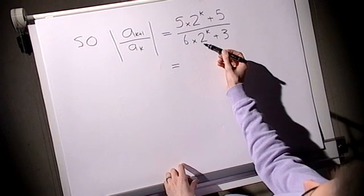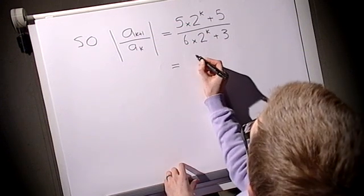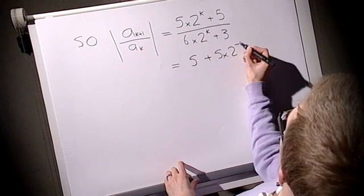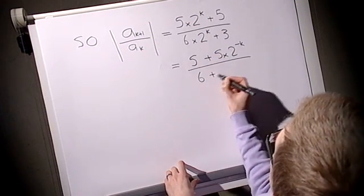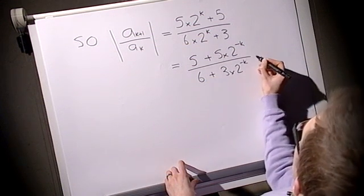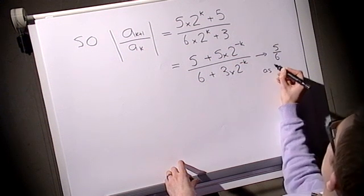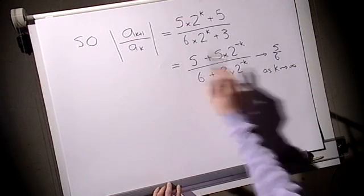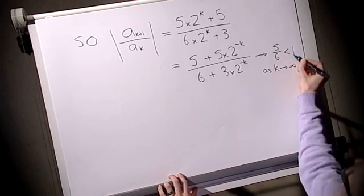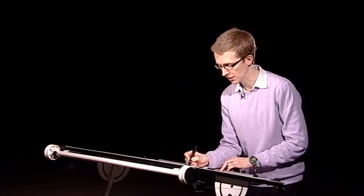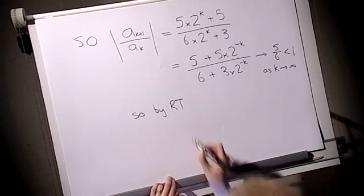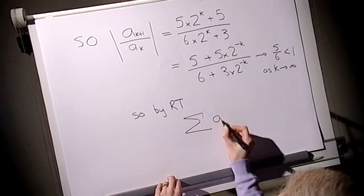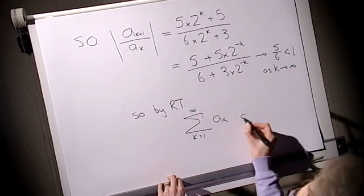You may see that as k tends to infinity, this is going to tend to 5 sixths. One easy way to see that would be to multiply the top and bottom by 2 to the minus k. So 5 plus 5 times 2 to the minus k, 6 plus 3 times 2 to the minus k. And this tends to 5 sixths, as k tends to infinity. So as k tends to infinity, this ratio tends to 5 sixths, which importantly is less than 1. So we can apply the ratio test to the limiting ratio here and deduce that our sequence of a_k's as k from 1 to infinity converged.